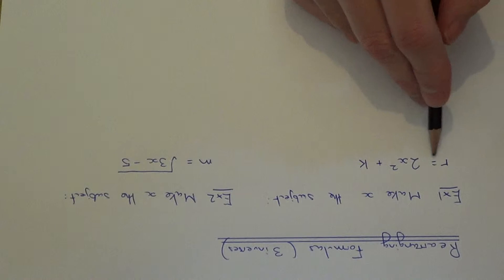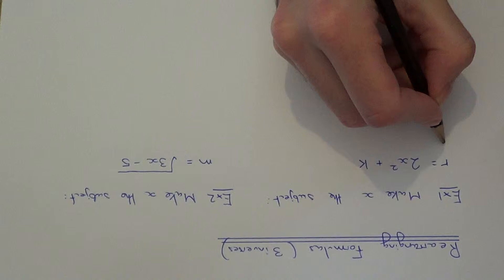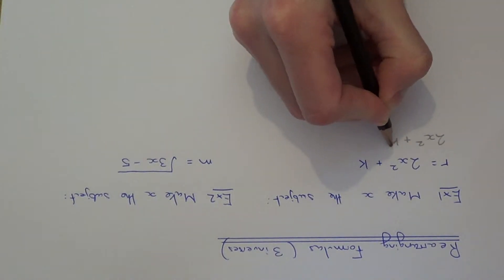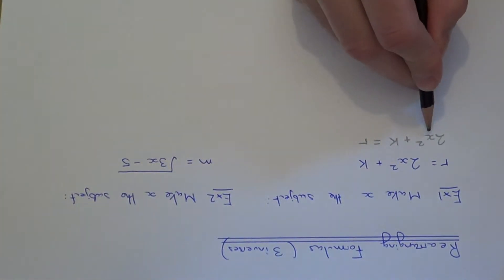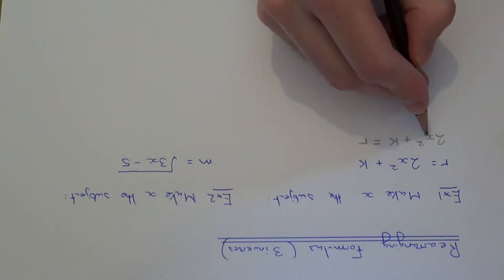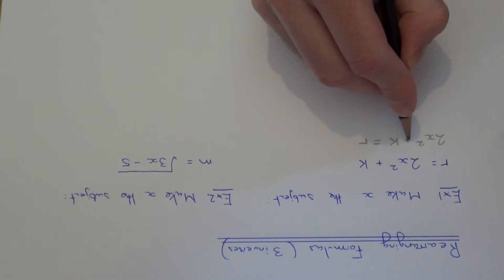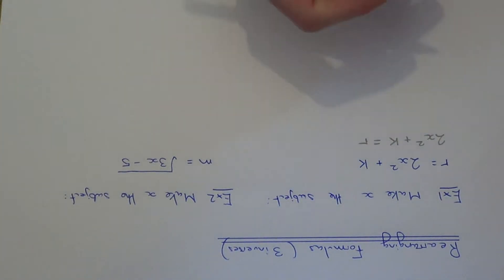First of all, swap the left-hand side and the right-hand side of the formula around, so rewrite it as 2x squared plus k equals r. If we look at the left-hand side of our formula, what's happening to x? It's been squared, then multiplied by 2, and then we add on k. So we need to get rid of these off the left-hand side, and we do this by doing the opposite operations in reverse order.